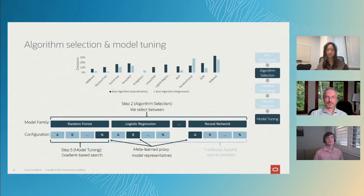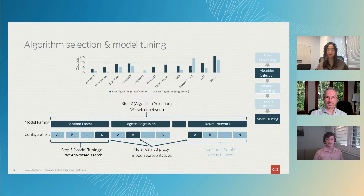Let's take a look at an example. For algorithm selection, there are a bunch of different machine learning methods that can be used to solve your problem. Depending on your dataset and task, different methods perform best, so we need to find the best machine learning model for your dataset.